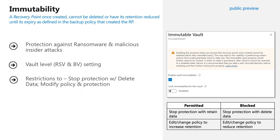Coming to immutability — this is a vault-level setting. Once you create a recovery point, it cannot be deleted and its retention period cannot be reduced. It protects against malicious actors within your organization trying to delete or reduce the backup retention period. What is permitted is you can stop protection and retain data. What is not allowed is stopping and deleting the data — we stop that delete operation completely once you enable the immutable vault. You can edit the backup policy to increase the retention period, but you cannot decrease it.